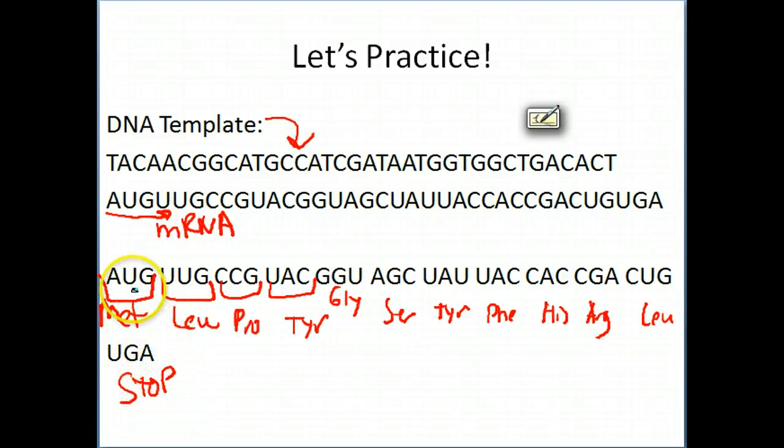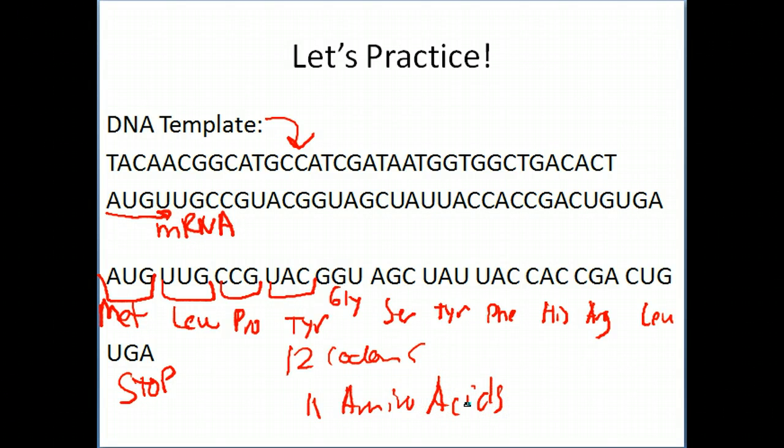So you have 1, 2, 3, 4, 5, 6, 7, 8, 9, 10, 11, 12 codons with 11 amino acids in the protein. So this is the general outline on how to do translation. It's very basic.